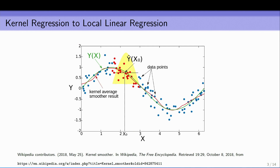The fix we're going to use is in the spirit of moving from kernel regression to local linear regression. In kernel regression, you have training points in blue and a test point, and you fit a Euclidean kernel — a function of the distance between your training points and your test point. Then you fit a weighted mean, giving high weight to nearby points and no weight to far-away ones, giving you a nice non-parametric fit.